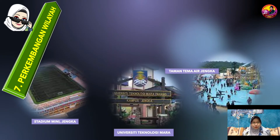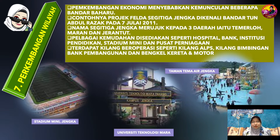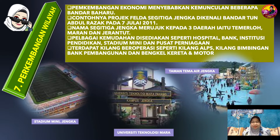Aspek yang ketujuh berkaitan dengan pembangunan wilayah. Perkembangan ekonomi menyebabkan munculnya beberapa bandar baru, antaranya melalui projek FELDA Segitiga Jengka yang telah menubuhkan Bandar Tun Abdul Razak pada 7 Julai 2011. Nama Segitiga Jengka merujuk kepada tiga daerah iaitu Temerloh, Maran dan Jerantut. Terdapat pelbagai kemudahan disediakan seperti hospital, bank, institusi pendidikan seperti Universiti Teknologi MARA, Stadium Mini, Pusat Perniagaan dan Taman Tema Air Jengka. Terdapat juga kilang beroperasi di kawasan tersebut.